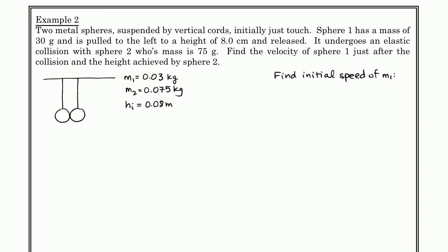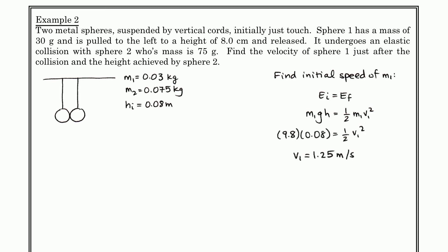We raise sphere 1 and drop it. Just before the collision, we find its speed using conservation of energy: gravitational potential energy Mgh converts completely into kinetic energy ½Mv². The masses cancel out, which is convenient. Solving gives V1 equals 1.25 meters per second.